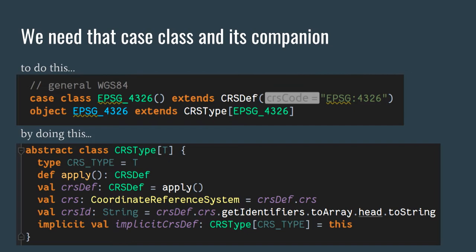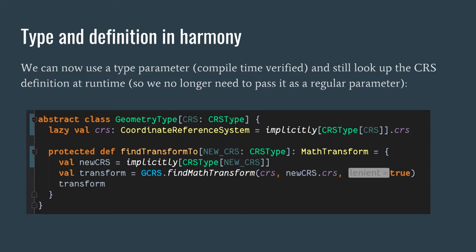Now we can do things like this. Here's a geometry type — a point or polygon — parameterized by our CRS with a context bound, which is a way of using type classes. It just means that for this type there must be a CRS type definition available. Given that we have the CRS type definition, we can find a mathematical transform to some new CRS for which there is also a CRS type definition. We know both definitions, so we can return a math transform.